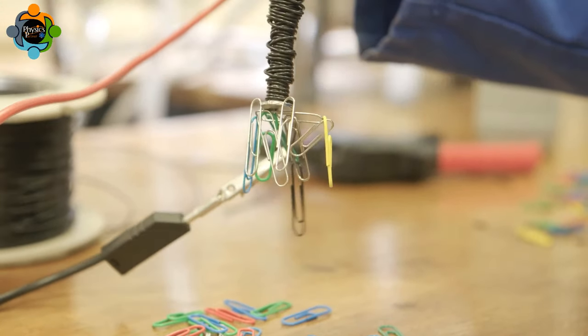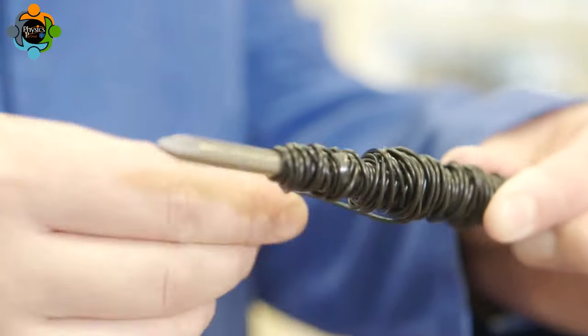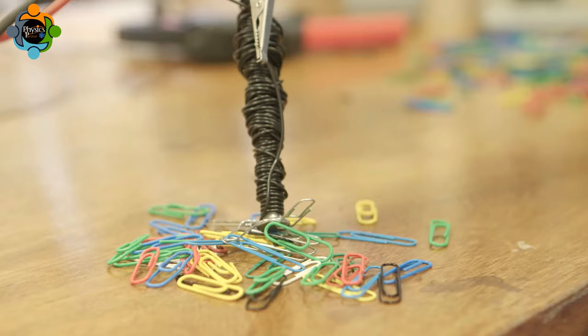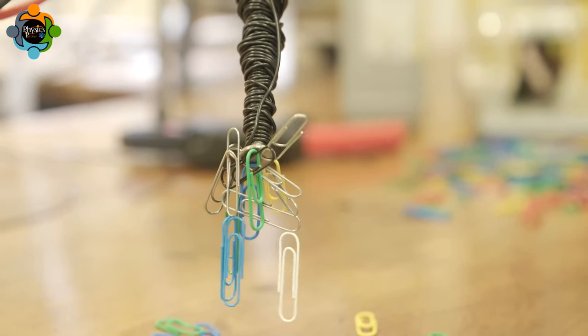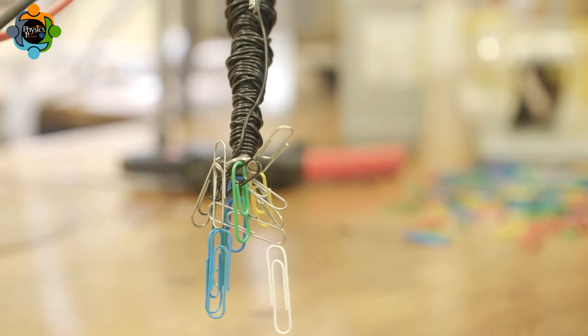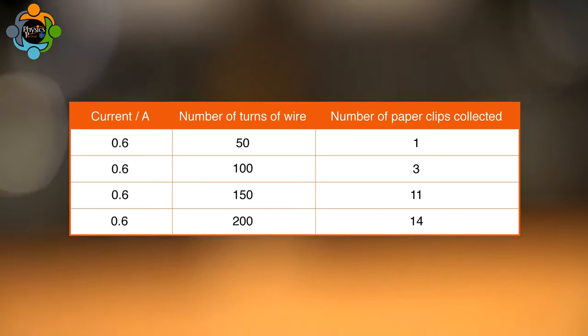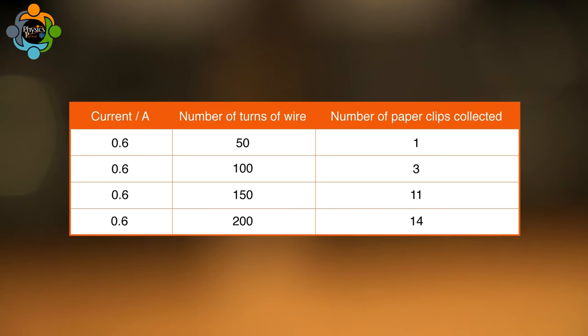The last 50 turns of wire are added, and the effect of this is once more measured. The results are recorded in the table. It is clear that as the number of turns of wire increases, the strength of the magnet increases.